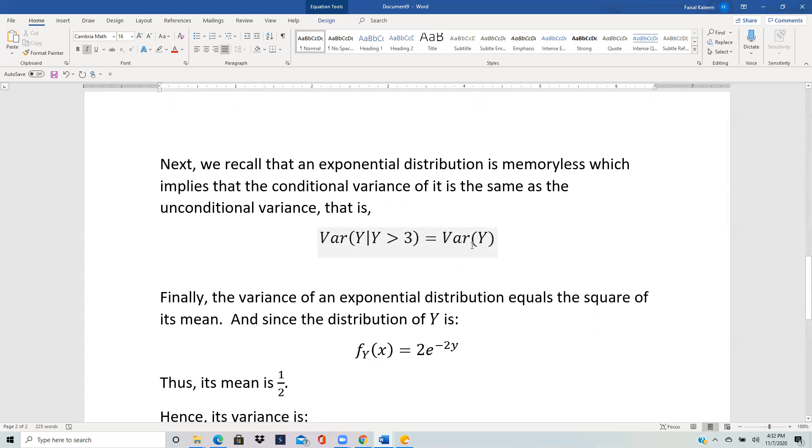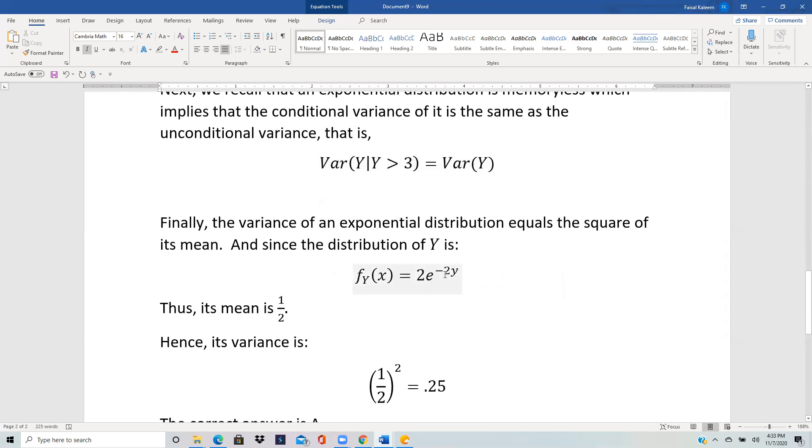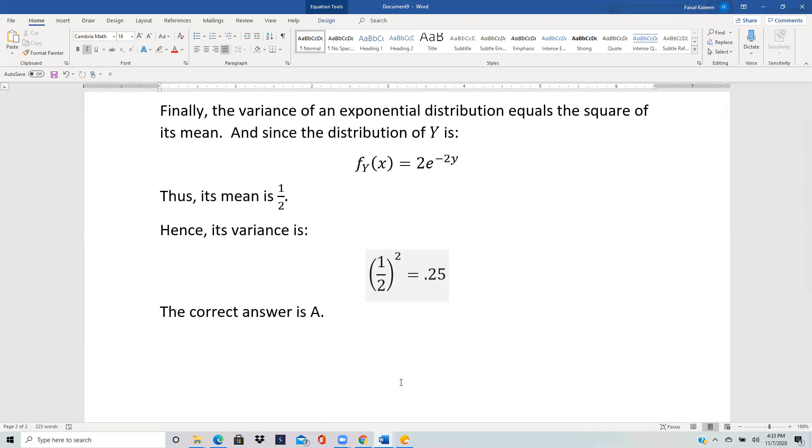Finally now we have reduced the problem to just finding the variance of y. And since y is exponential we know that for an exponential distribution the variance equals the square of the mean and since the distribution of y was 2e^(-2y), so from here we can see that the mean is one half. Remember if we write it as (1/k)e^(-y/k) then k is the mean so whatever the coefficient is the mean is the reciprocal. So if the mean is one half then the variance is square of it, square of one half is 0.25 and that is choice a.